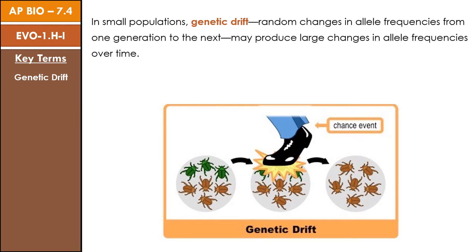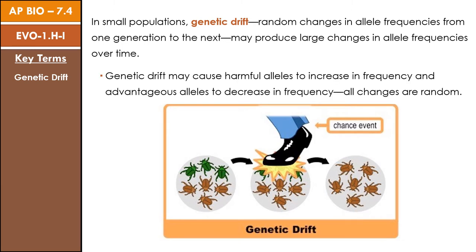Another mechanism that can affect the allele frequency in a population over time is that of genetic drift. Unlike gene flow, genetic drift is completely random and will have larger effects if a population doesn't have a very high genetic diversity. Essentially, genetic drift is random changes in allele frequency from one generation to the next, and these changes can compound over time if it's a large enough change in the allele frequency. These genetic drifts may cause harmful alleles to increase in frequency or advantageous alleles to decrease in frequency, but what's important to remember is that all of the changes that occur here are random.